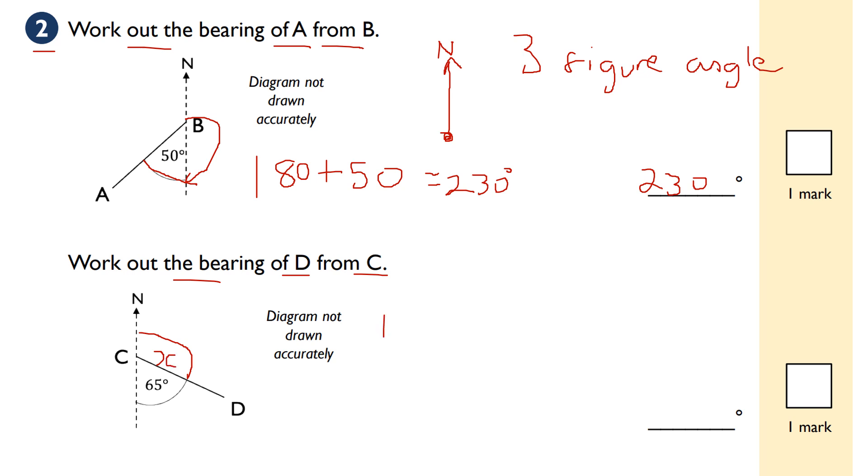To work out X, we do 180 minus 65. If you're not sure, do column subtraction. Borrow from the 8, which becomes a 7. That becomes 10. 10 take 5 makes 5, 7 take 6 makes 1, and 1 take nothing makes 1. Our final answer is 115 degrees.